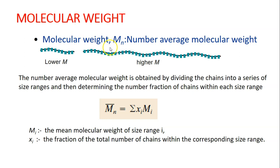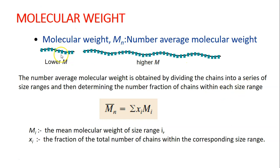There are actually many ways to calculate the average molecular weight, but for your syllabus, we are going to cover two types. The first one is what we call number average molecular weight. It is obtained by dividing the chains into a series of size ranges — lower M, higher M, middle M — and then determining the number fraction of chains within each size range.